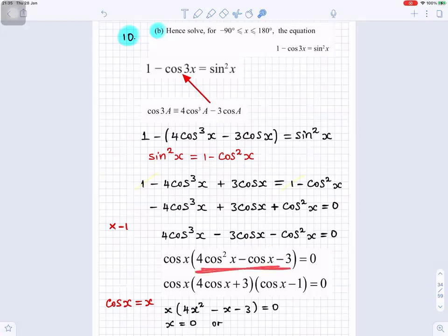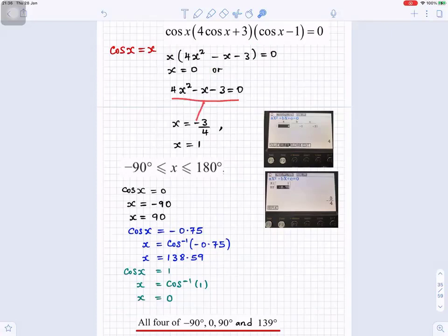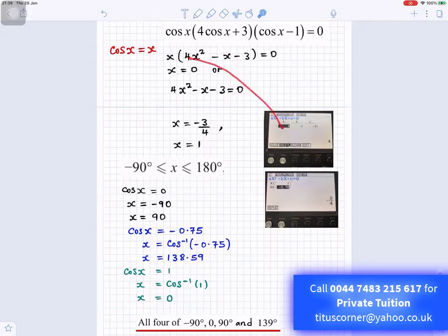When you factorize this, it's like factorizing 4x squared minus x minus 3. So, you can use your calculator to factorize that. When you factorize, either x is equal to 0 first, or when you factorize that, you get x equals minus 4 over 3 and x equals 1. And that's how you put it in the calculator. 4 goes there, minus 1 goes there, minus 3 goes there. You get your two answers.